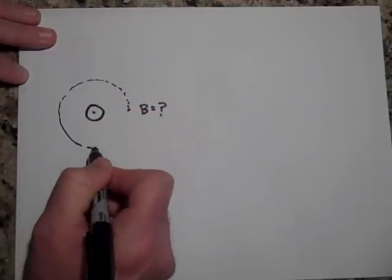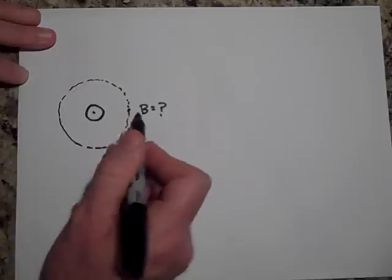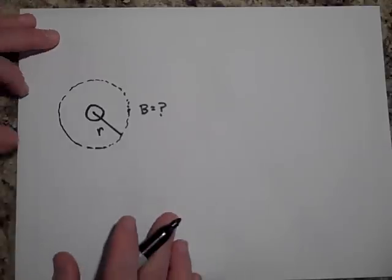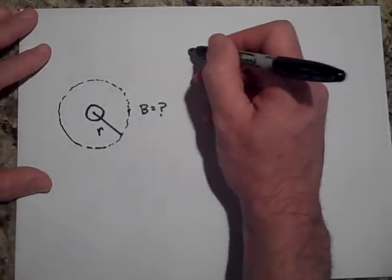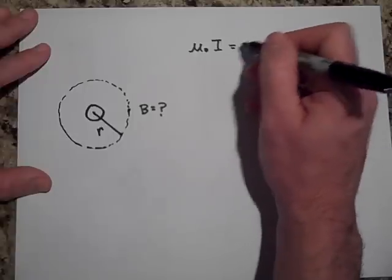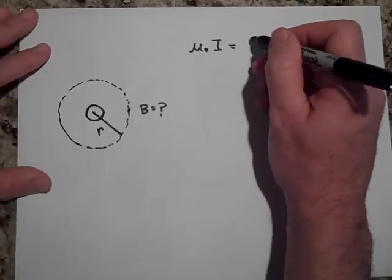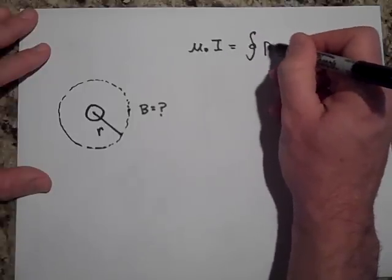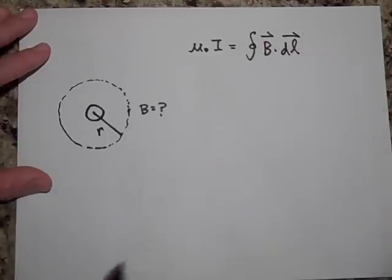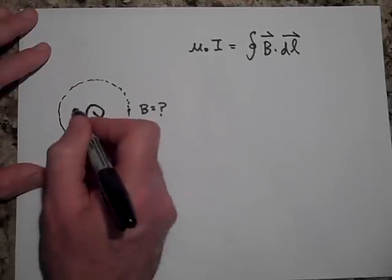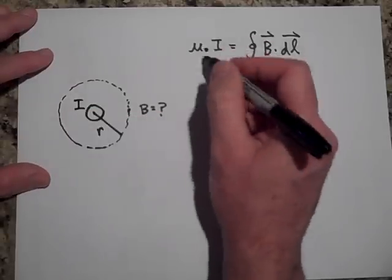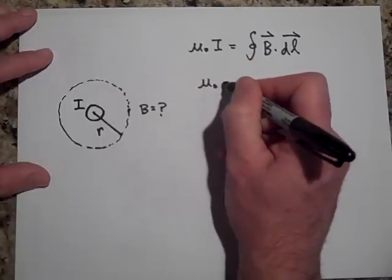And I just apply Ampere's law. μ₀I equals the integral of B⃗·dl⃗. Now I'm going to say that the total current coming out of there is just capital I, so this will just turn into μ₀ times I. That's how much current is going through the Amperian membrane.